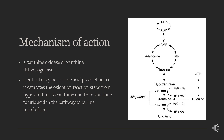Xanthine oxidoreductase (XOR) can act as a xanthine oxidase or xanthine dehydrogenase. In humans, it is a critical enzyme for uric acid production as it catalyzes the oxidation reaction steps from hypoxanthine to xanthine and from xanthine to uric acid in the pathway of purine metabolism. Febuxostat potently inhibits XOR, blocking both its oxidase and dehydrogenase activities. With high affinity, Febuxostat binds to XOR in a molecular channel leading to the molybdenum pterin active site, where allopurinol demonstrates relatively weak competitive inhibition.